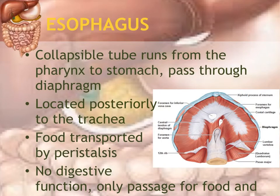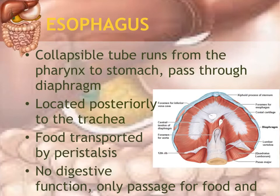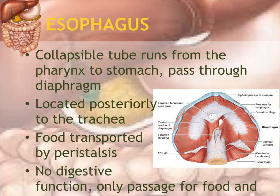Food from the pharynx leads into the esophagus, which is located just behind the trachea — the trachea is directly in front and the esophagus is directly behind it. Unlike the trachea, the esophagus is collapsible; when there is no food passing through it, it is flattened out, and only opens up when food is passing through. There is no digestive function for the esophagus — it is just a passageway for food and water. Without the esophagus, the stomach would be directly attached to the oral cavity, which would cause problems.